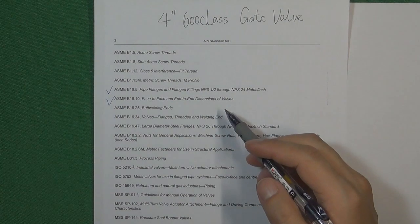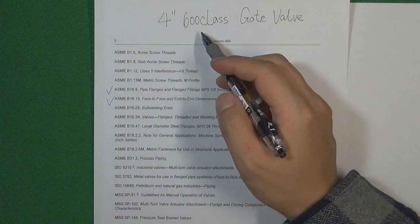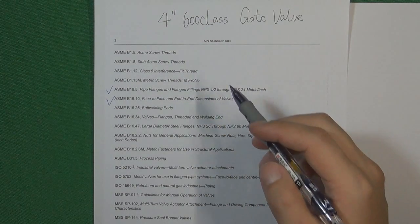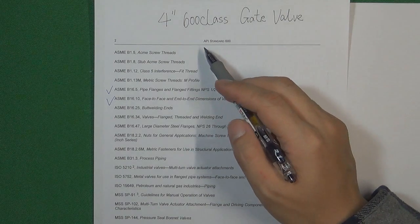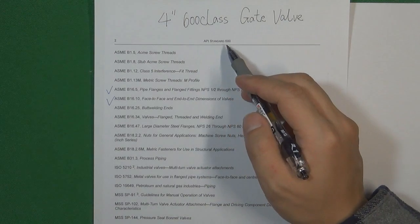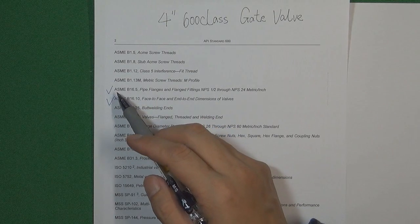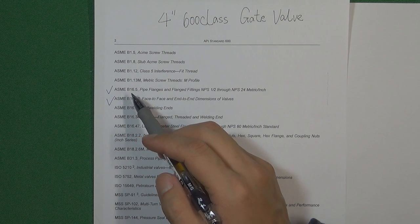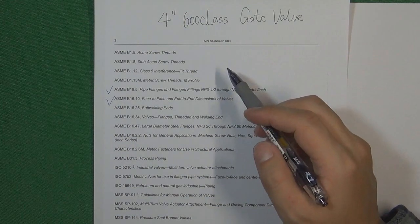In this video, we're going to design a gate valve which is 4-inch 600 pressure class. When we're going to design a valve, the first part we're going to draw for the blueprint is the valve flange. According to the standard API 600, the flange standard is coming from ASME B16.5. So we're going to use this standard to draw the valve body flange first.